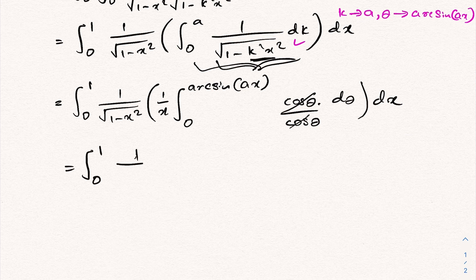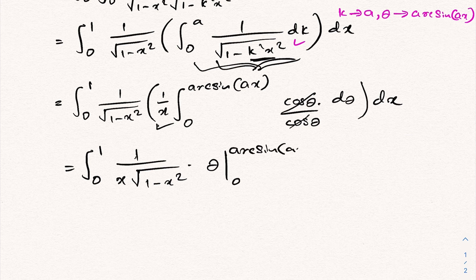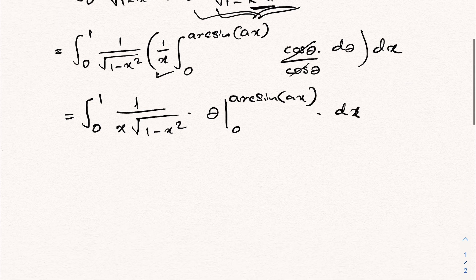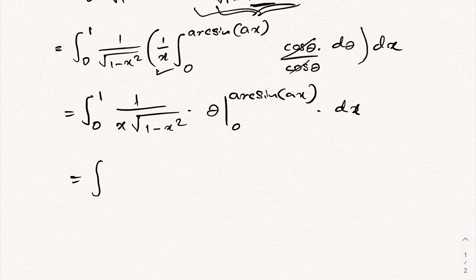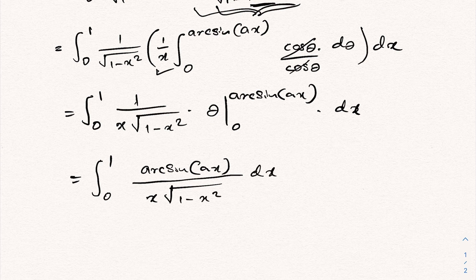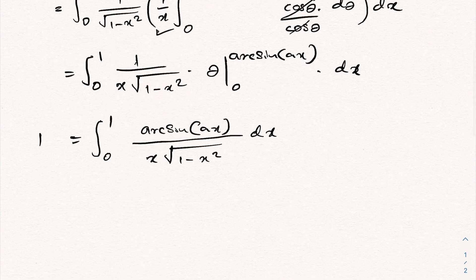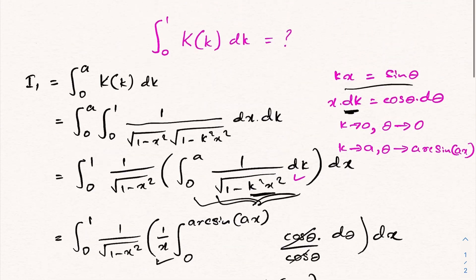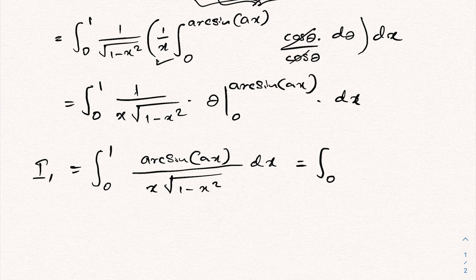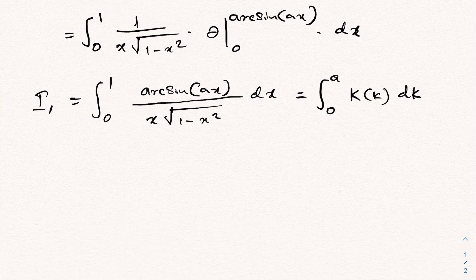We have the integral from 0 to 1 of 1 over x times the square root of (1 minus x squared), times θ evaluated from 0 to arcsin(ax), all dx. Applying the limits gives the integral from 0 to 1 of arcsin(ax) over x times the square root of (1 minus x squared) dx, and this equals i1, which is the integral from 0 to a of K(k) dk.